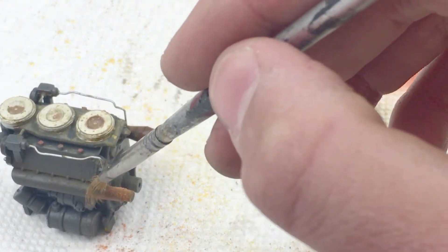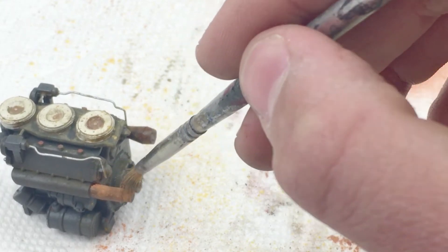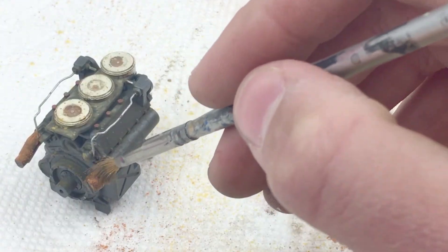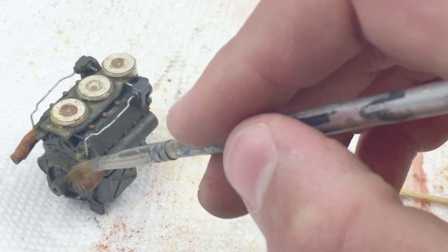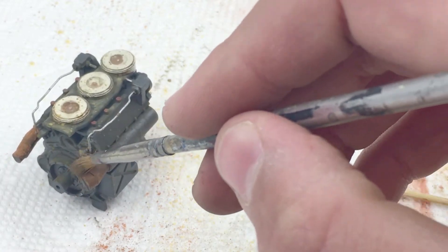I then finished the effect off with some rusty chalk pigments. I started by heavily applying a lighter color. Then, when I was happy with that result, I put some browner, darker colors in small spots to add some texture and contrast to the exhaust pipes.